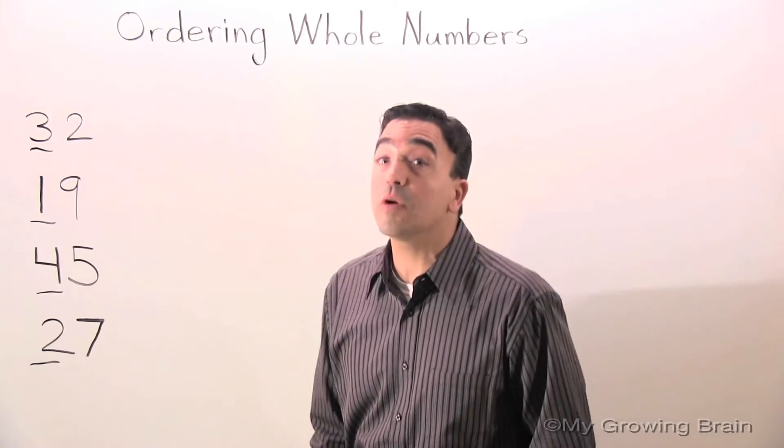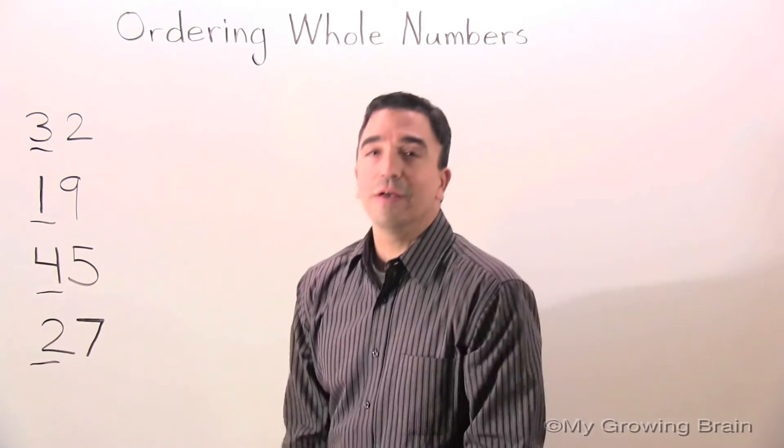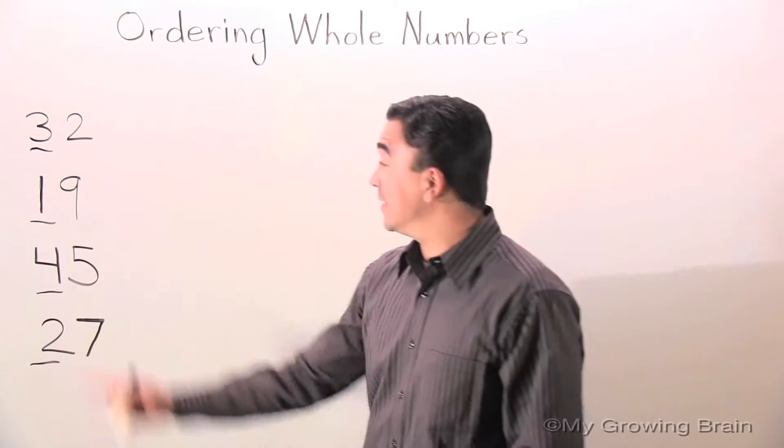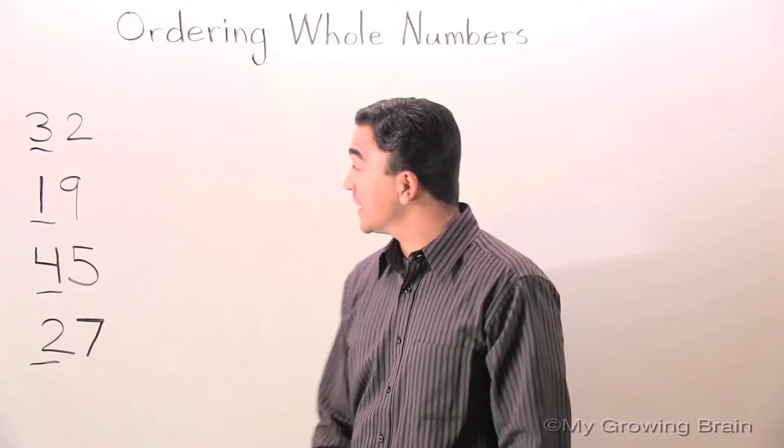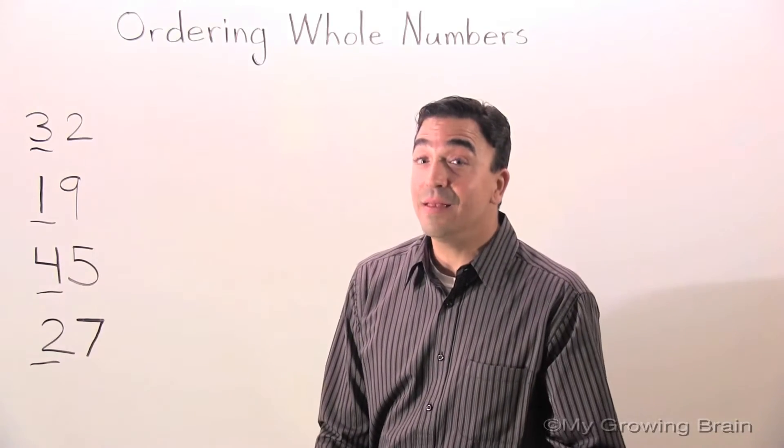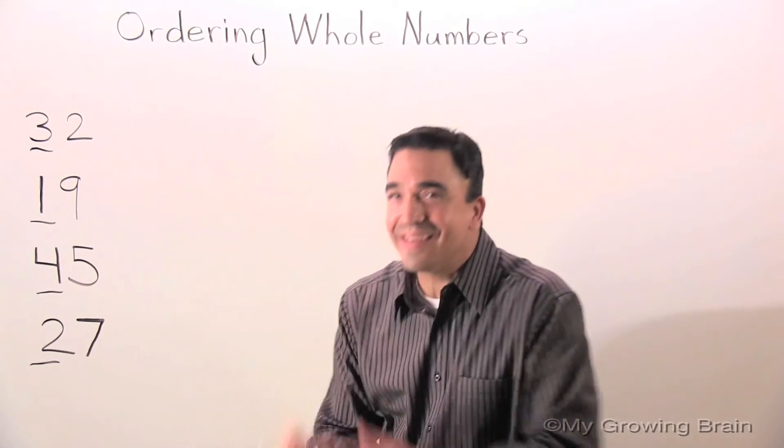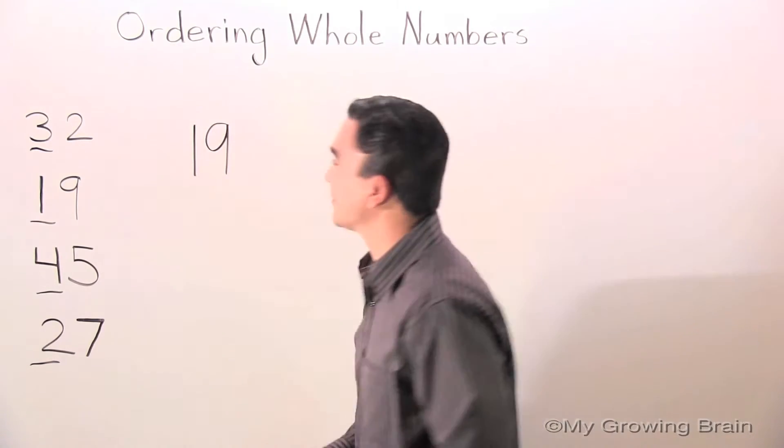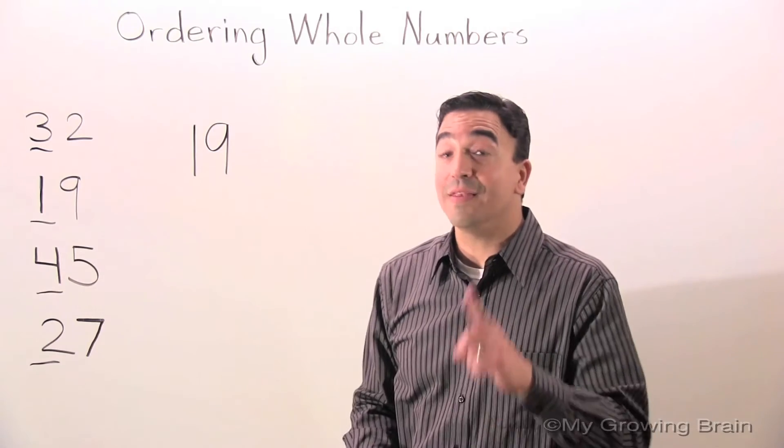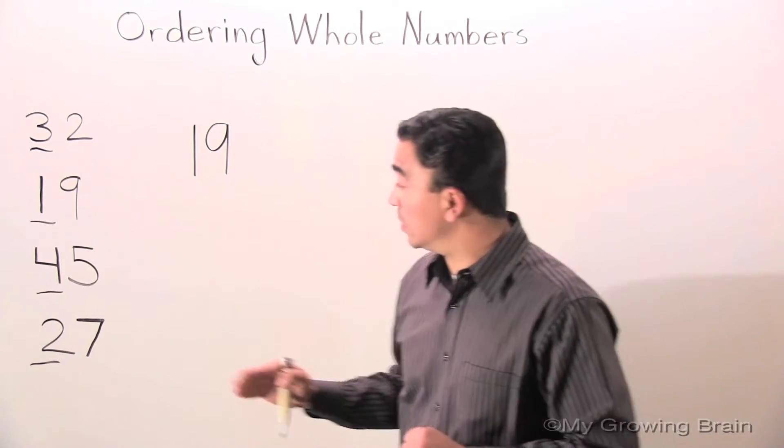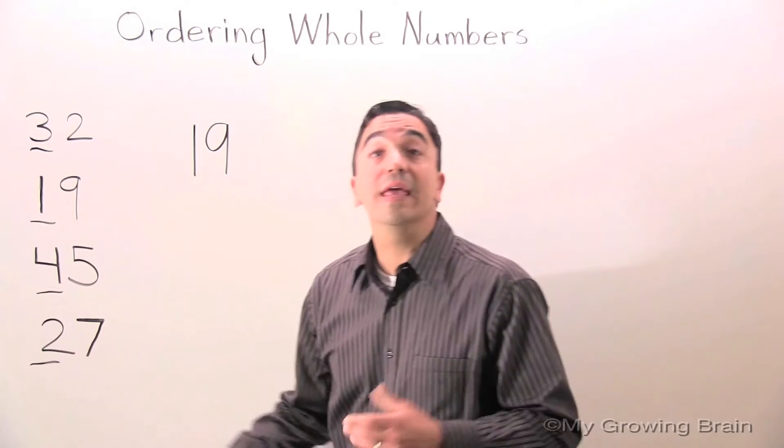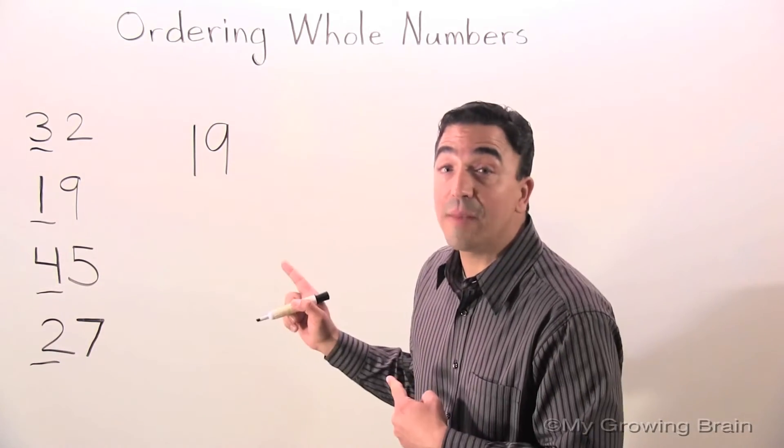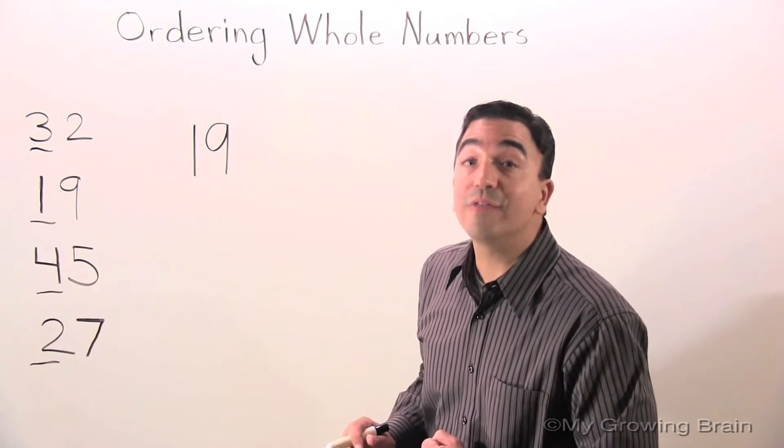And again, I'm going to put them in order from least to greatest. We all know that the digit one in the number 19 is the least. So the next digit that would be next in order is the digit two in the number 27. I'm going to put a semicolon to separate the two numbers.